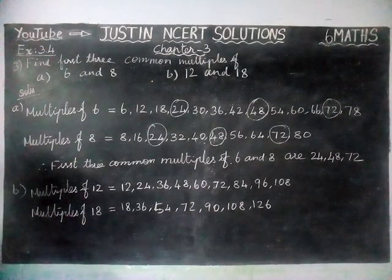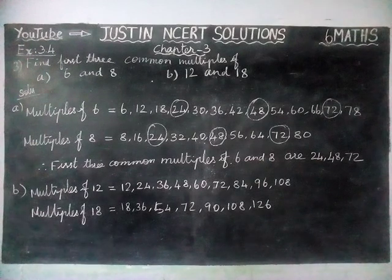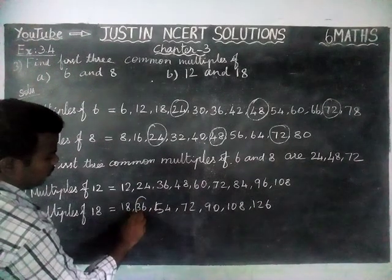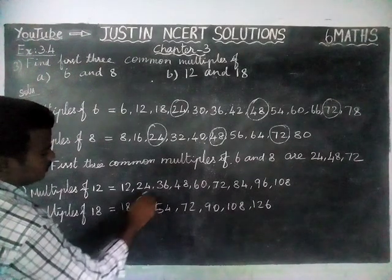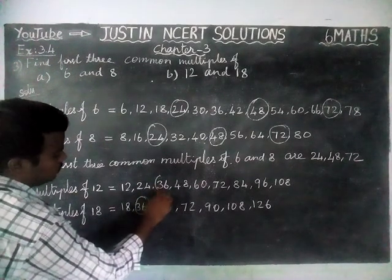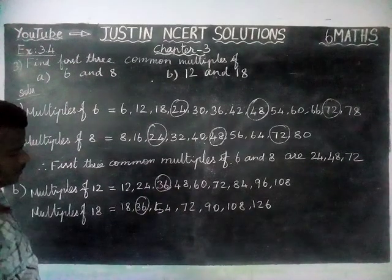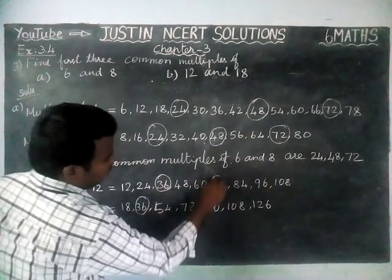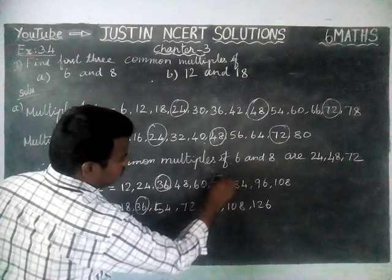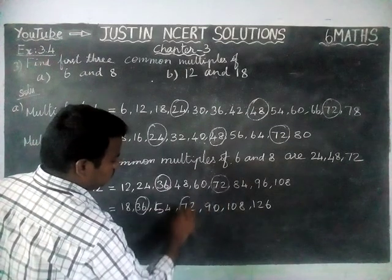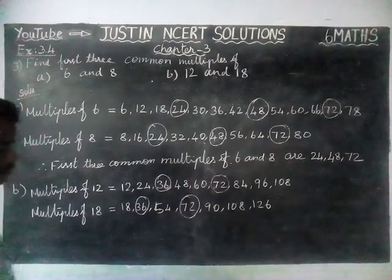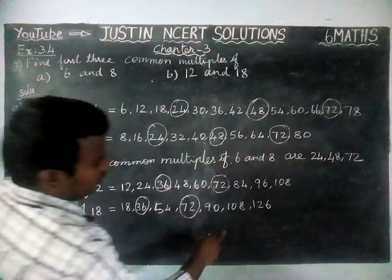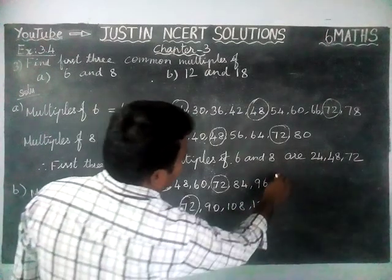Now, we are going to check it. Common multiples: the first common multiple is 36. Next number, 72. Then, 108.